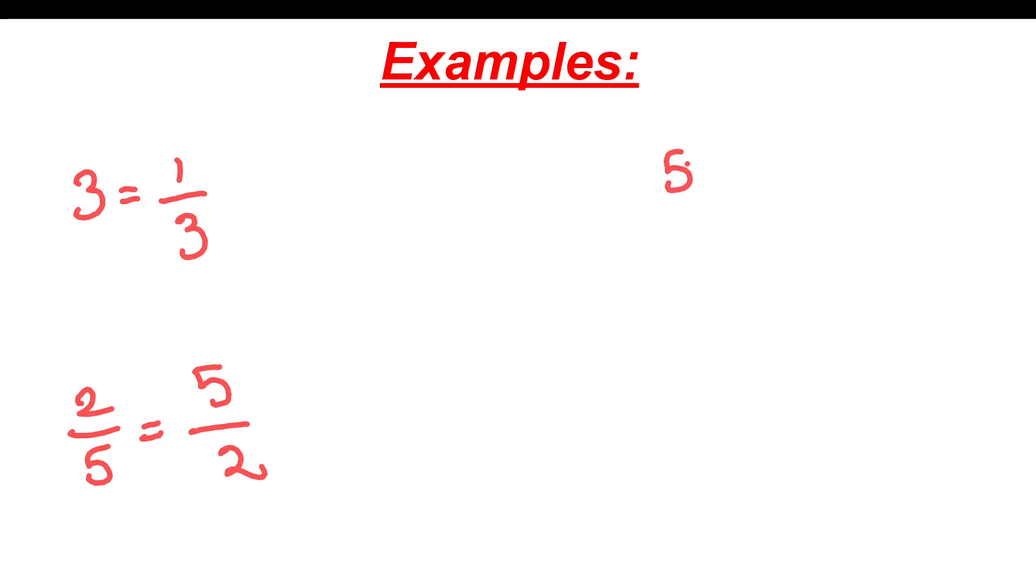5 power minus 2. Multiplicative inverse of this number is 1 by 5 power plus 2. 1 by 5 power minus 2. The Multiplicative inverse of 1 by 5 power minus 2 is 5 power plus 2 by 1.